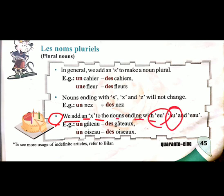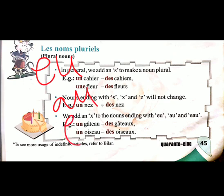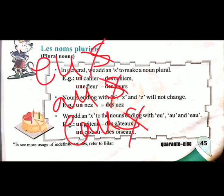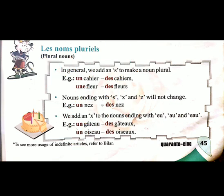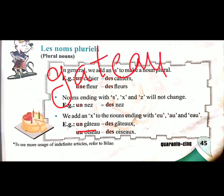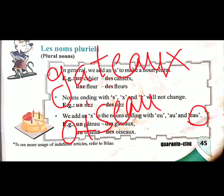Rule three: we add 'x' to nouns ending with 'eau.' If any word ends with 'eau,' we do not add 's' — we add 'x.' For example, gâteau means cake. It ends with 'eau,' so the plural is gâteaux. Similarly, oiseau means bird — it ends with 'eau,' so the plural is oiseaux.